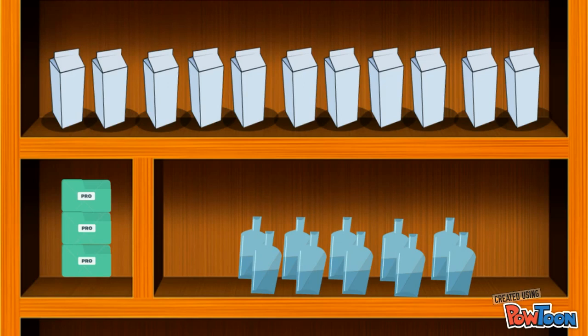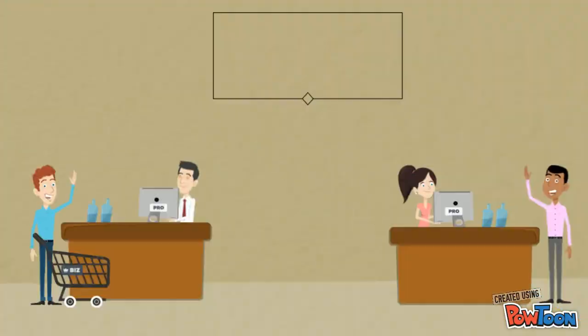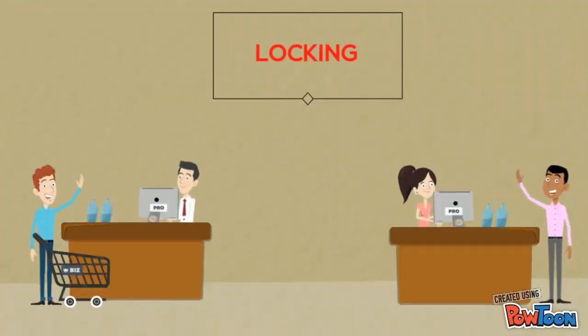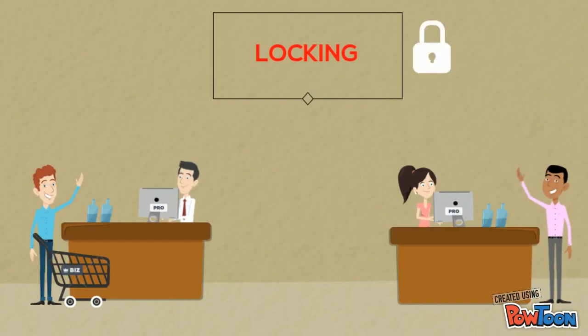Let us now look at the solution that we shall implement. The technique that I have implemented to solve this problem is called locking. The dynamics behind it is basically that the field is locked while one party is accessing it, and when they are done, it unlocks and is available to be accessed by someone else.